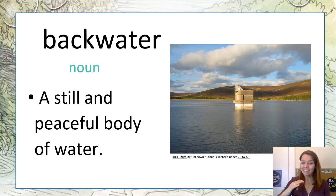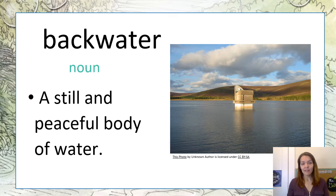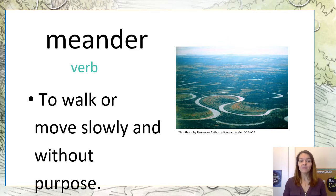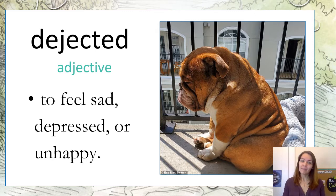And now we're back. You can scroll past that pausing point. We're going to go on to our vocab. On the next page, you'll see a definition and some yellow boxes. Our first word today is backwater — a still and peaceful body of water. We talked about this word yesterday. Type backwater in that yellow box. The next word is meander, which means to walk or move slowly and without purpose. Type meander in that yellow box. And then our last word, dejected — that means to feel sad, depressed, or unhappy. Type dejected in the third yellow box.